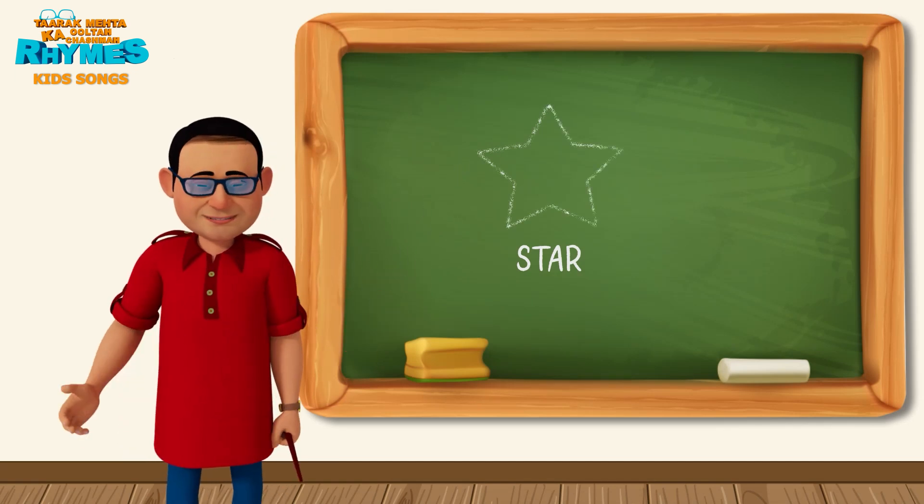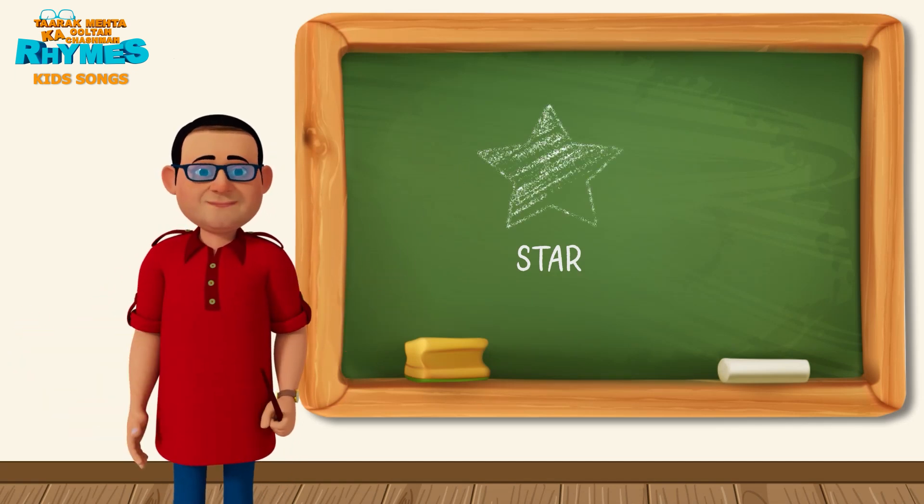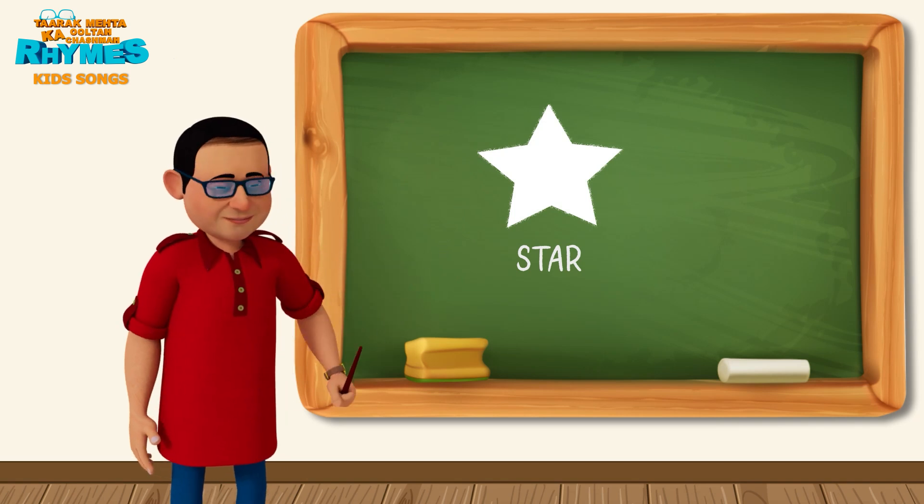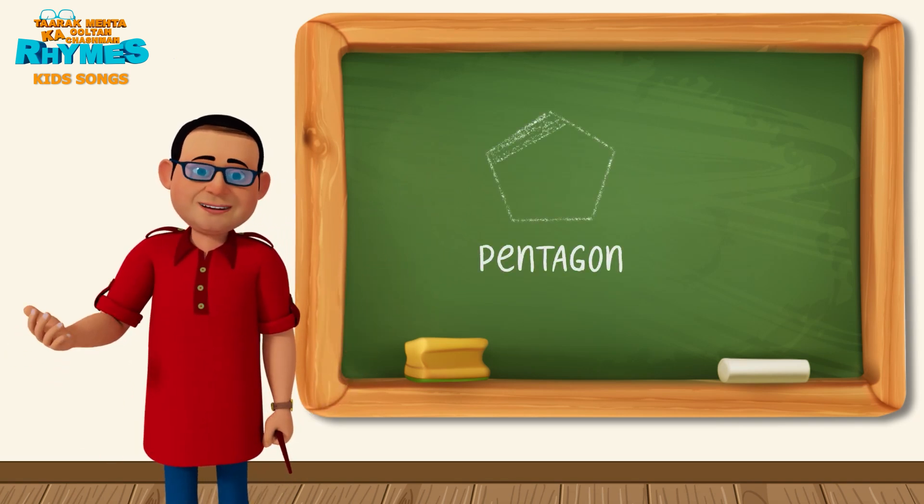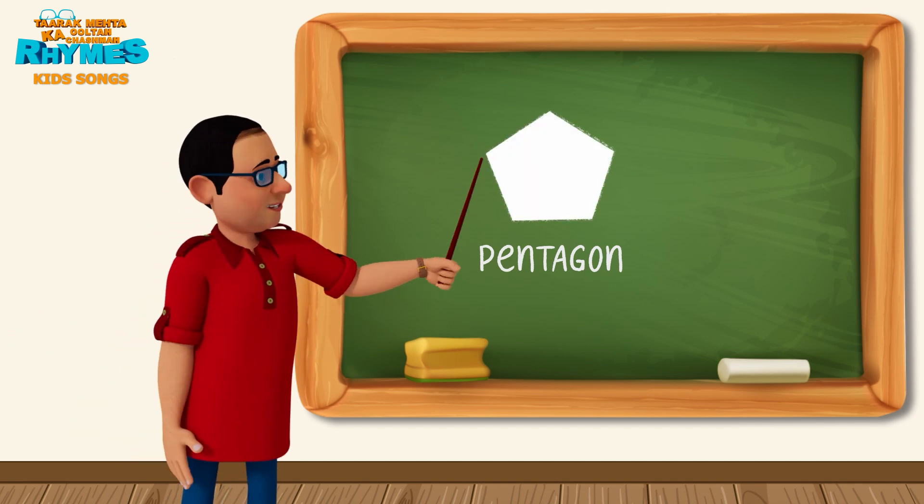This is a star. A star is pointy from all sides. This is a pentagon. A pentagon has five sides.